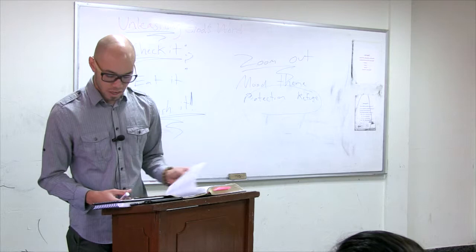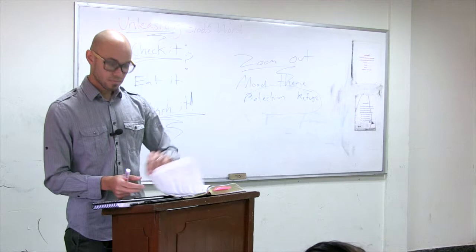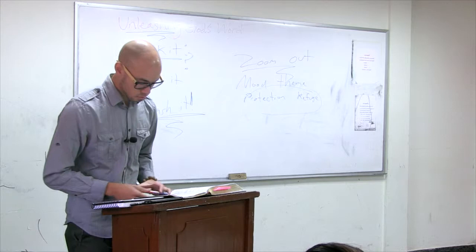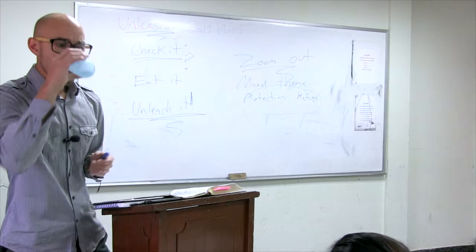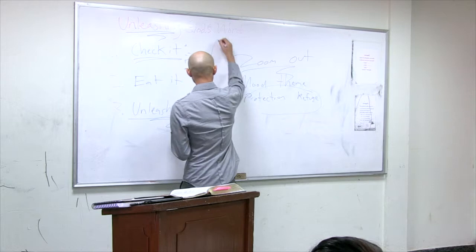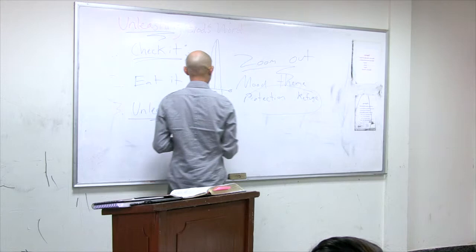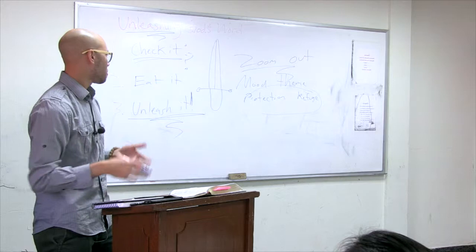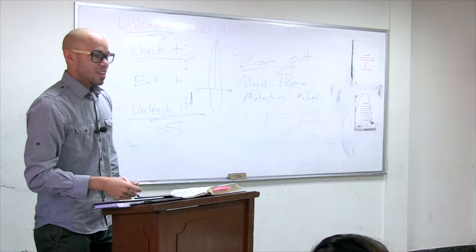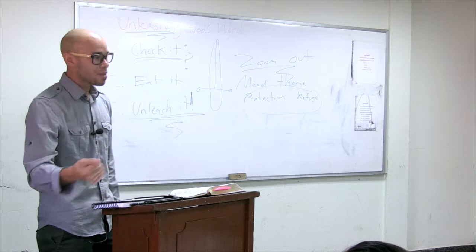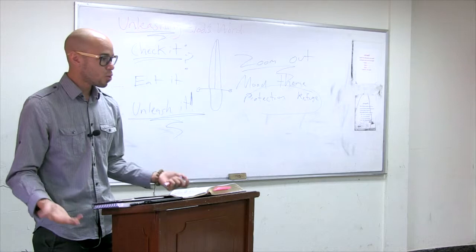Look here at Hebrews. Hebrews chapter 4. And can someone read verses 12 and 13 there? For the word of God is living and active, sharper than any two-edged sword, curing to the division of soul and of spirit, of joints and of marrow, and discerning the thoughts and intentions of the heart. And no creator is hidden from his sight, but all are naked and exposed to the eyes of him to whom we must live upon. So as a Hebrew writer, as he's talking about God's word, he compares it to a sword. And what is he saying? He says it's like a double-edged sword basically. He says it's going to cut you up. It's going to divide you. You're going to be laid bare before it. What's hidden before God? Nothing. Nothing is hidden.